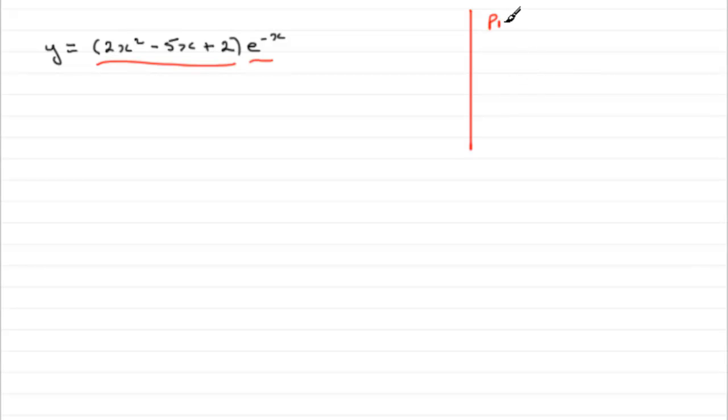And the product rule, just very briefly, although you can see this on my website in a bit more detail, is if you've got two functions of x being multiplied together, call it u and v,